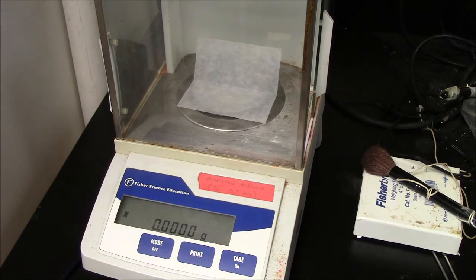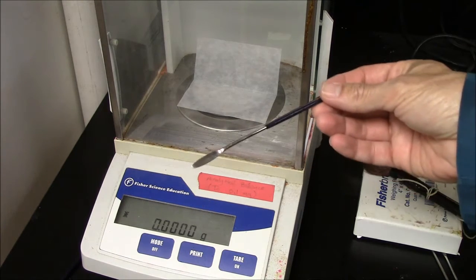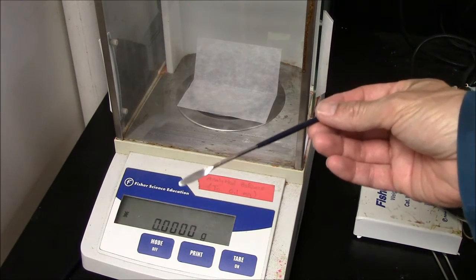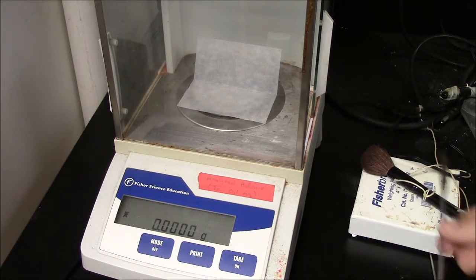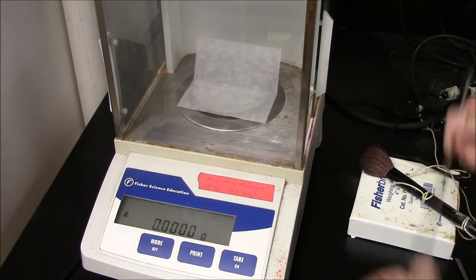I'll attempt to weigh out about five milligrams of benzoic acid here. First of all, I need the right type of spatula. This one looks a little too blunt for me, so I'll use one of these fine spatulas.